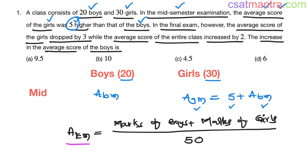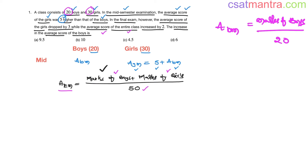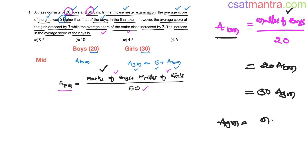Now let's find the average score of the entire class in the mid-semester examination. That equals the total marks of all students divided by the total number of students, which is 20 plus 30, that is 50. Since average of boys equals marks of boys divided by 20, marks of boys equals 20 times ABM. Similarly, marks of girls equals 30 times AGM. So the class average in mid-semester is (20·ABM + 30·AGM) divided by 50.